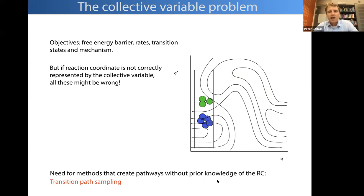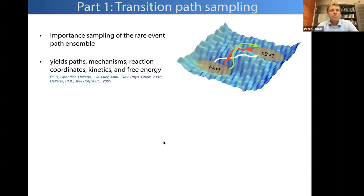For these types of systems it's clear that you need methods that circumvent this problem. One way is to use a so-called two-ended method where you create pathways — trajectories — between two prior-defined states. This is also known as transition path sampling, and I'm going to focus on that.